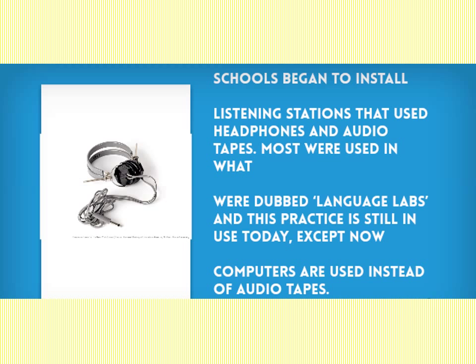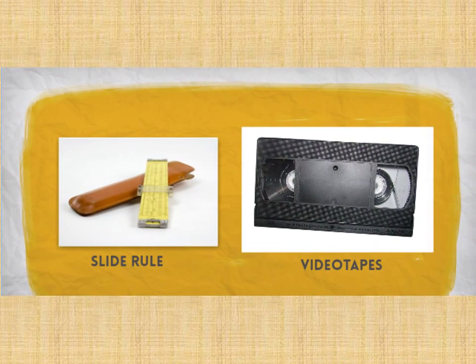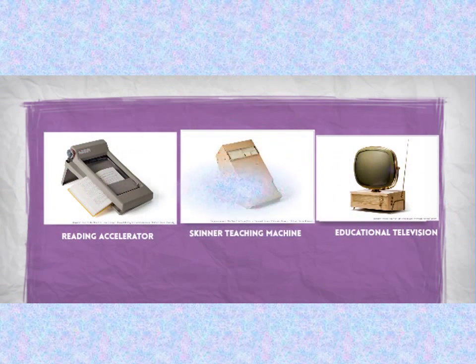The slide rule was one of the first calculation tools before the calculator. It was developed by William Oughtred in the 17th century and grew up in the 70s. What would school be without videotapes? Developed by John Mullen and Wayne Johnson, it allowed for collective images to be shown in a picture which was revolutionizing for educators and students. The reading accelerator was developed in 1957 which helped students read more effectively. This helped students turn the pages of a book.